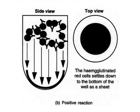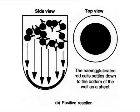This diagram shows a positive reaction. The cells form a lattice, and as they settle, they conform to the shape of the U-bottom plate on the left. On the right, we see the top view where a broad sheet of red blood cells is seen.